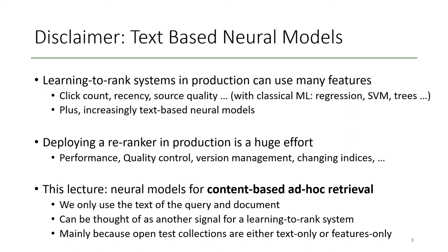I also have to stress that deploying a re-ranker in production is a huge effort involving performance, quality control, version management, changing indices, etc. — and we don't look at those today. What we are going to look at is neural models for content-based ad hoc retrieval, which means that we only use the text of the query and the document. This can be thought of as another signal in a bigger learning to rank system.